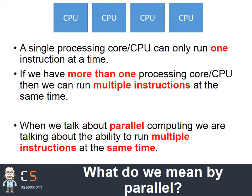So what do we mean by parallel? A single processing unit — a CPU or a single core within a CPU — can only do one thing at once. It can run one instruction, it can do one fetch, one decode, one execute, that's it. So if I had lots of different processes, I would have to swap them in and out really quickly — that's multitasking.